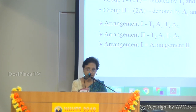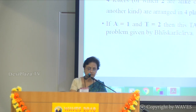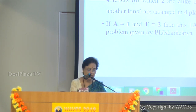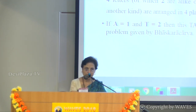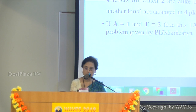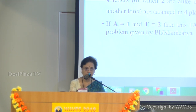One arrangement is T1 A1 T2 A2 and another is T2 A1 T1 A2. Both these arrangements are the same since we cannot differentiate between T1 and T2, or between A1 and A2. T1 and T2 of the group are identical and can be arranged in 2! ways; similarly A1 and A2 in 2! ways. Therefore these 4 letters, of which 2 are alike of one kind and 2 of another, are arranged in 4! / (2! × 2!) ways. If A = 1 and T = 2, then this Tata problem reduces to the original problem given by Bhaskaracharya.